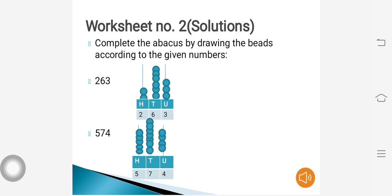The next question is 574. In 574, 5 is in the place of hundreds, so 5 beads in the place of hundreds. 7 is in the place of tens, so 7 beads in the place of tens, and 4 beads in the place of units or ones.